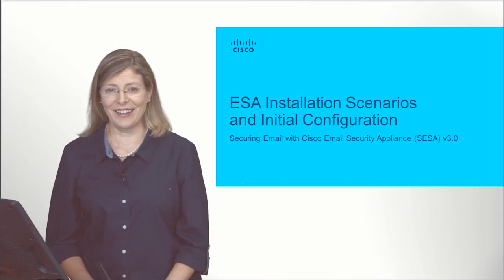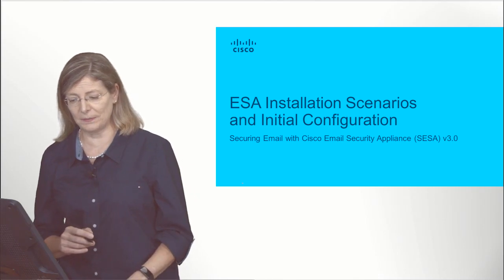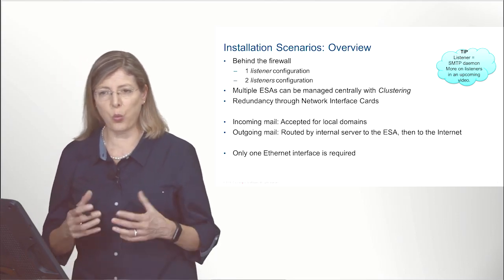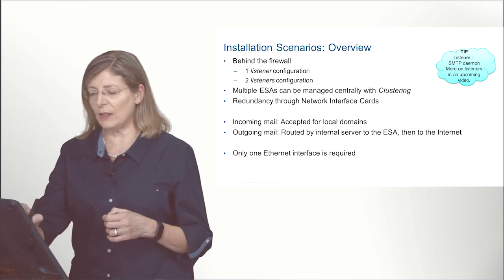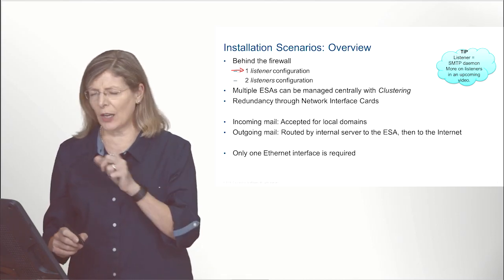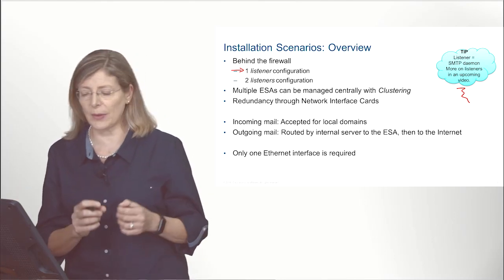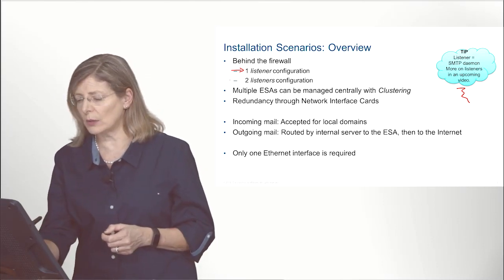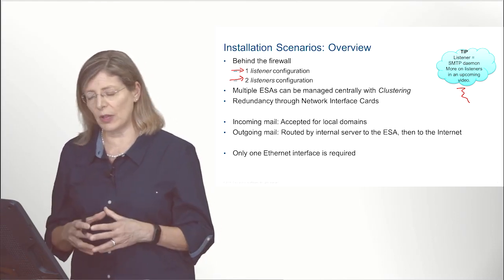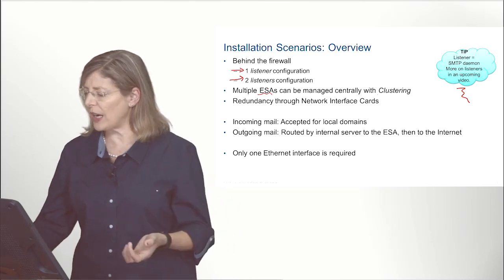Hi, it's Catherine again, here to talk about the ESA installation scenario and the initial configuration. The installation scenario when we want to install an ESA is that your ESA can be installed with one listener — the concept of listeners will be dealt with in great detail later, but think of it for now as an interface. So we will install one or two interfaces on our ESA. We also have to think about whether we have multiple ESAs that we wish to configure the same way, in which case maybe we should install them in a clustering manner.